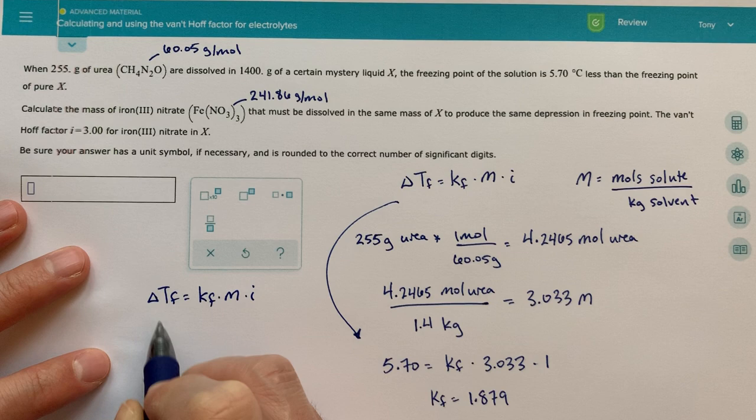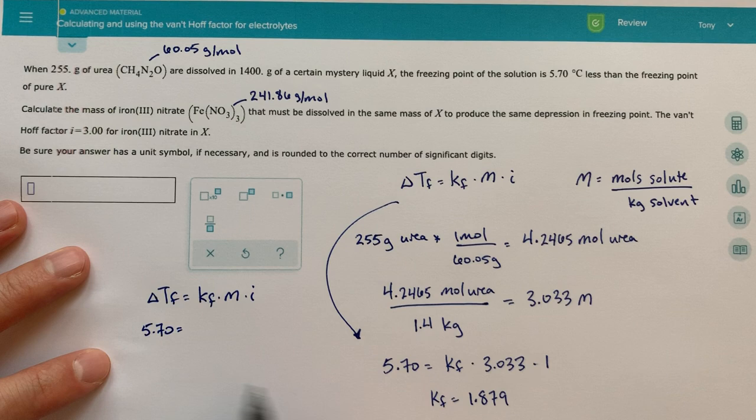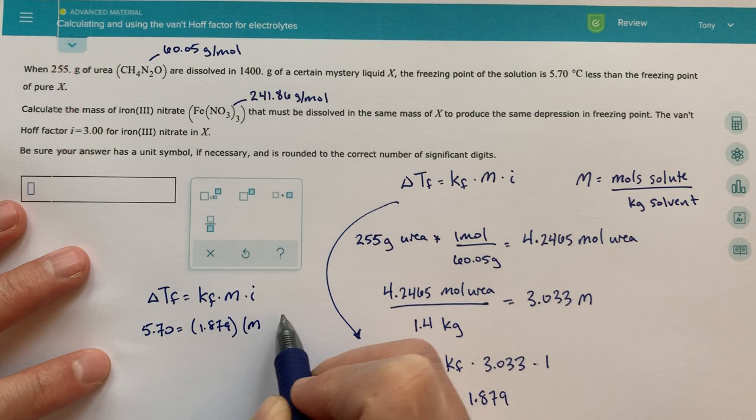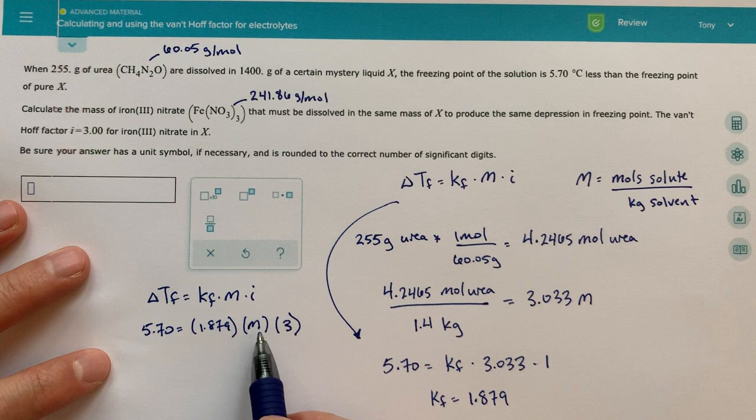So we know what our van't Hoff factor is. Let's go ahead and rewrite this over here. Delta TF equals KF times molality times I. Our delta TF is going to be 5.7 because it says it's the same. Our KF we know is this 1.879. Our molality is what we don't know. And then our van't Hoff factor we're told is three.